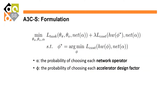The overall formulation for A3CS is to minimize both the task loss L-task for the deep RL agent and the hardware cost L-cost. The task loss is parameterized by theta-pi, the weights for the actor network, theta-v, the weights for the value network, and alpha, the structure parameters defining the network architecture. The hardware cost is parameterized by phi-star, the optimal set of hardware parameters defining the hardware architecture, which is solved by minimizing the L-cost function.